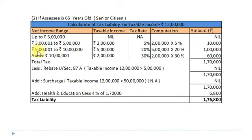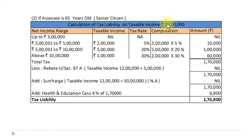Third stage: Rs. 5,00,001 to Rs. 10 lakh; taxable income Rs. 5 lakh at 20% = Rs. 1 lakh. Above Rs. 10 lakh: taxable income Rs. 2 lakh (Rs. 12 lakh minus Rs. 10 lakh); applicable tax rate 30%; computation Rs. 2 lakh × 30% = Rs. 60,000. Total tax amounts to Rs. 1,70,000.